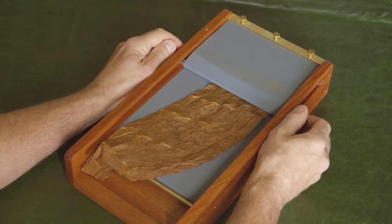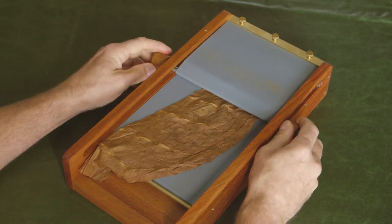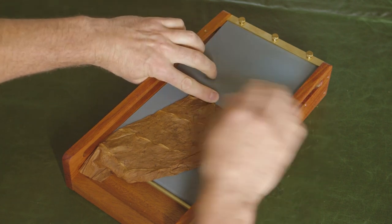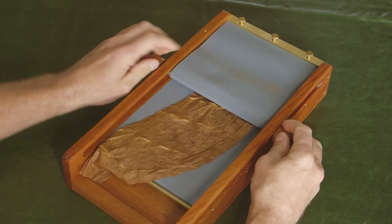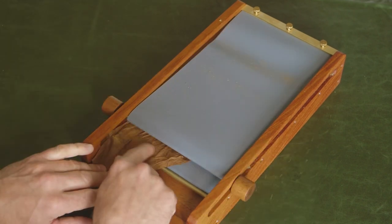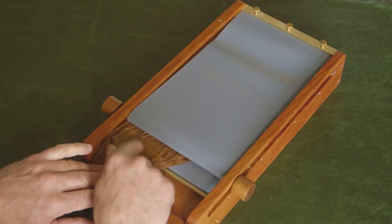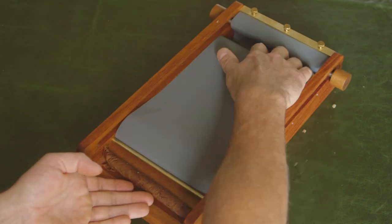Now roll the rod up over the wrapper. Depending on the leaf you're using, you may need to stretch it a bit to keep it tight. Once you're close to the end, dab a bit of gum arabic, tobacco glue or pectin onto the leaf and finish the roll.